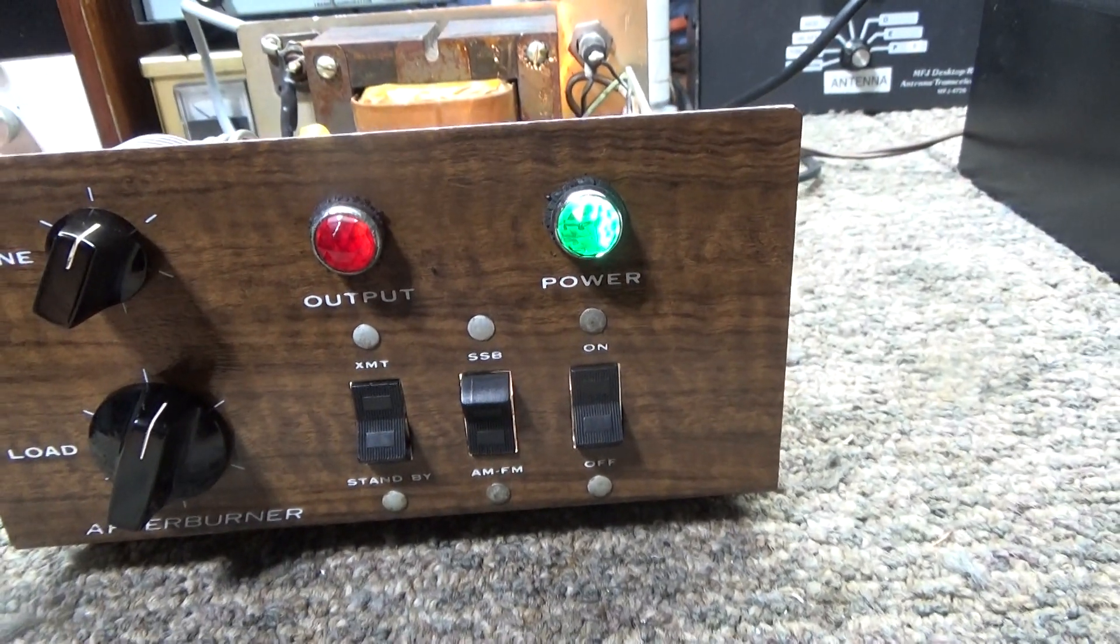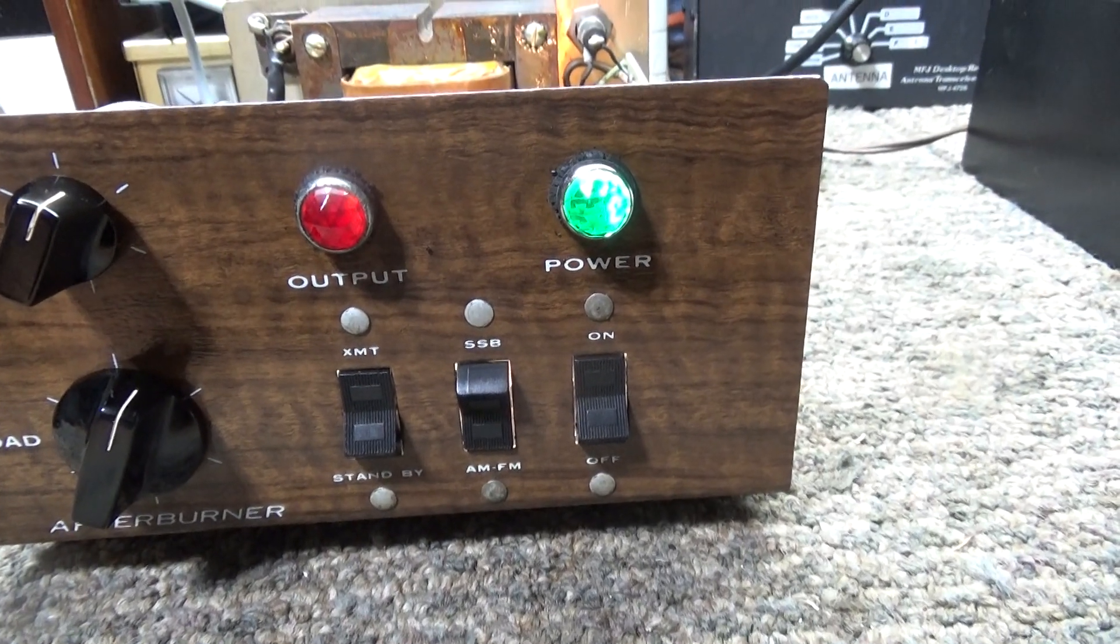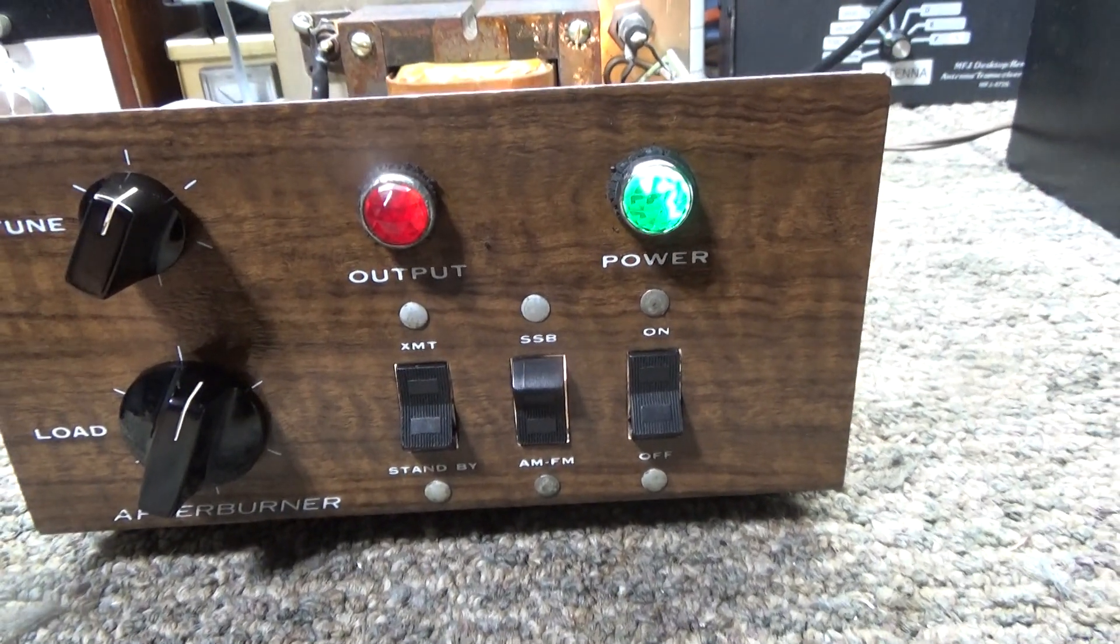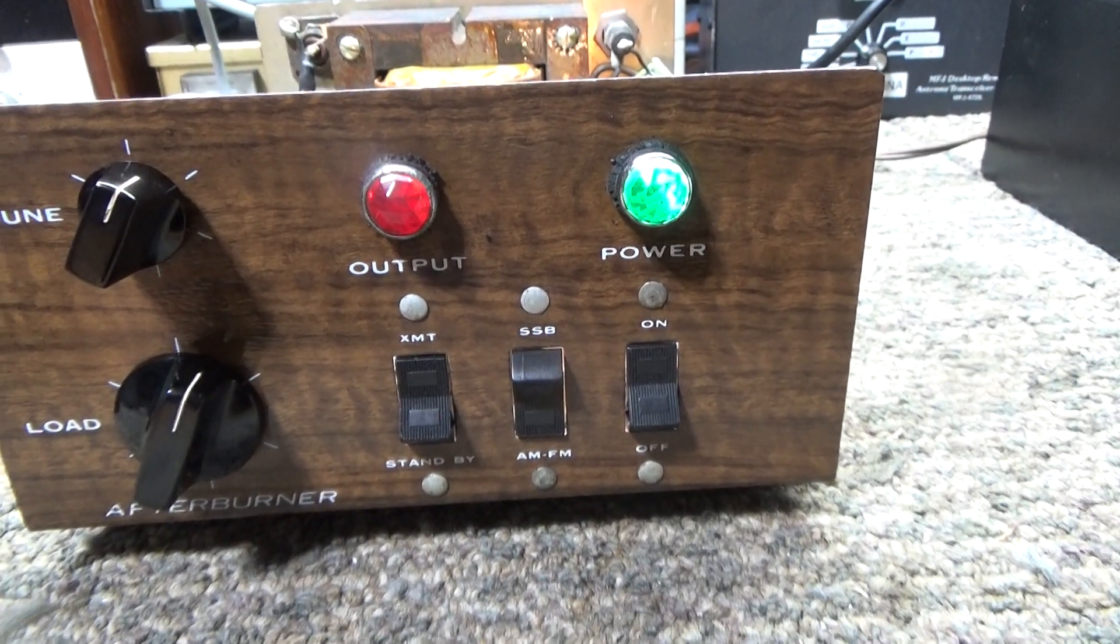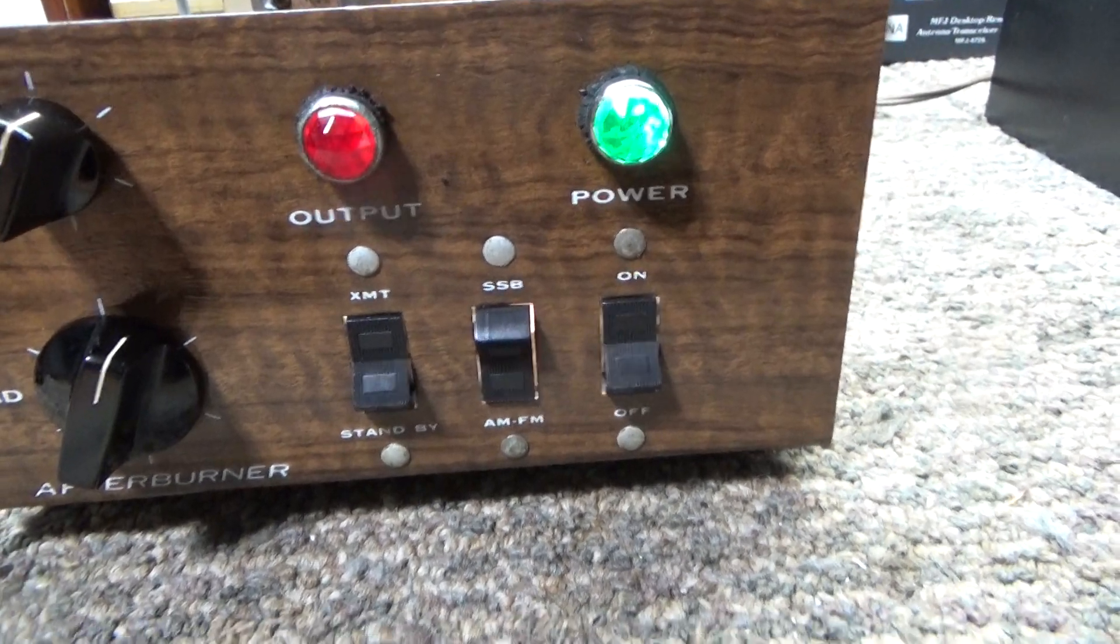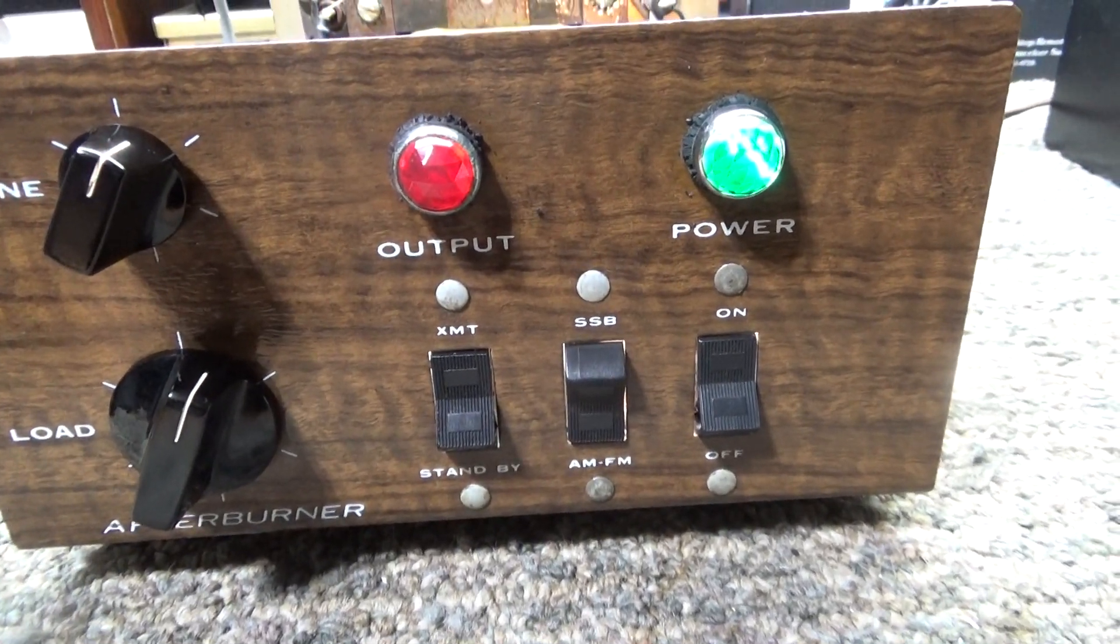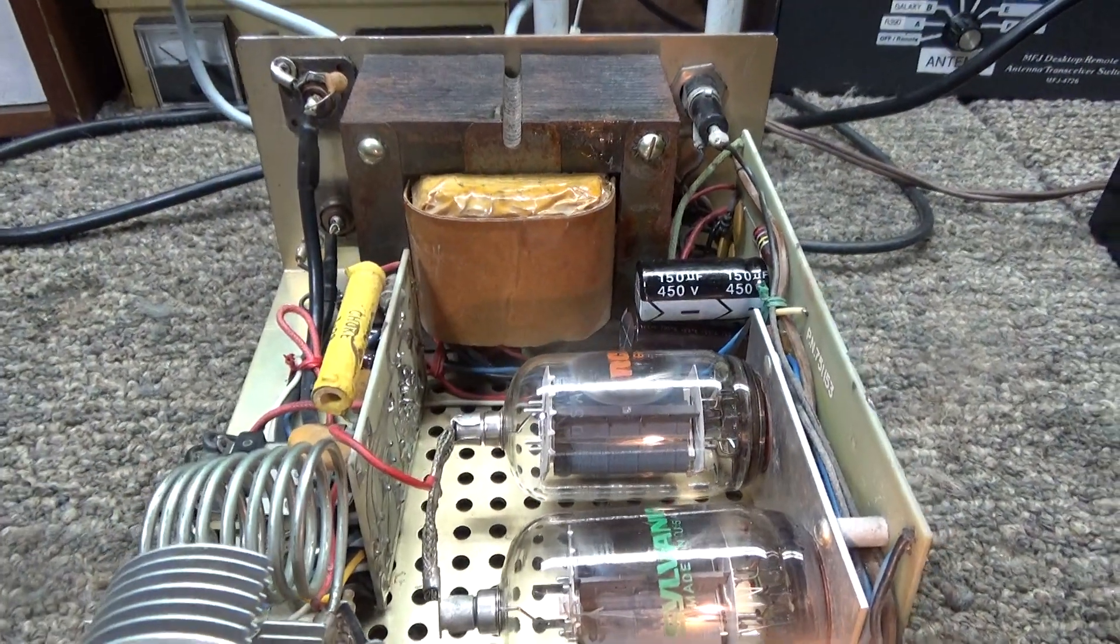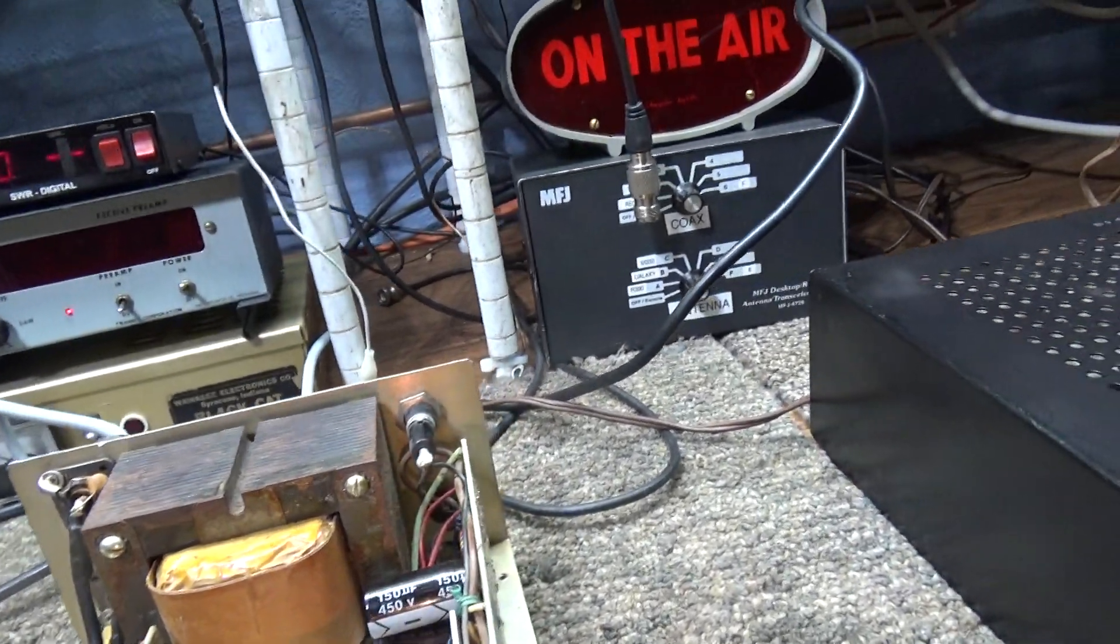Some of them have preamps and some have a TVI filter on the output side, maybe to get past the FCC. But this one is the basic one - no preamp, no meter, no TVI filter, none of that stuff. Just basically a two-tube amplifier with no frills, just a basic two-tube grounded grid, about 50 watt amplifier.